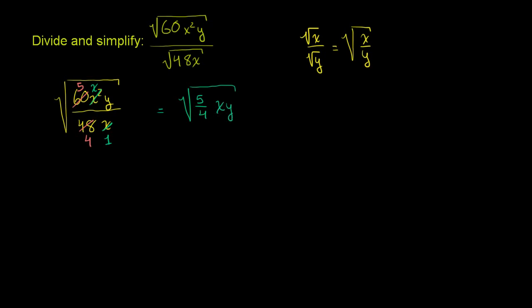And now, we could leave it just like that, but we might want to take more things out of the radical sign. One possibility is you could say that this is really the same thing as, this is equal to 1/4 times 5xy, all of that under the radical sign. And this is the same thing as the square root of 1/4 times the principal root of 5xy.